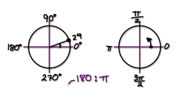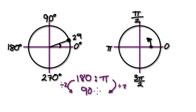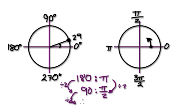If you halve this side — so if you divide this by 2 — then you also have to divide this by 2. So if you halve this side, you will have 90 degrees on one side, and pi over 2 radians on the other. And then if you halve it again, you will have 45 degrees, and pi over 4 radians.